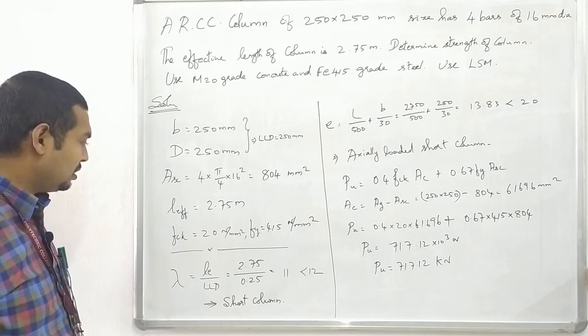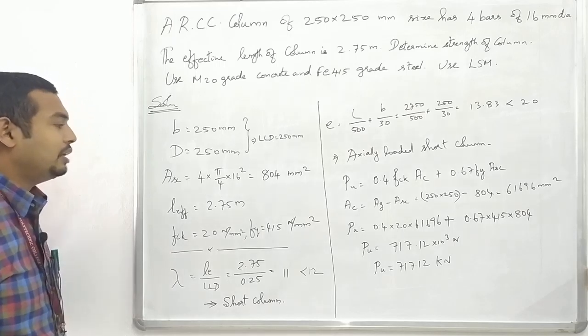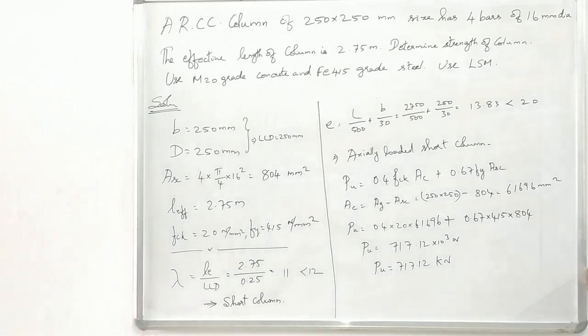Next, Asc, area of steel in compression: 4 bars of 16 mm dia, so 4 into pi by 4 into 16 square equals 804 mm square. Effective length is 2.75 meters.